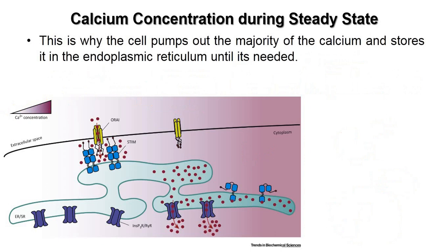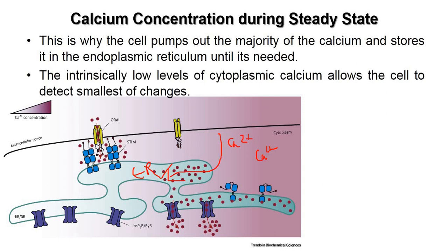The cell pumps out the majority of calcium from the cytosol and stores it in the endoplasmic reticulum. Because the intrinsic calcium concentration in the cytoplasm is so low, even a small change in calcium can be immediately detected. This intrinsically low level of cytoplasmic calcium allows the cell to detect the smallest possible changes in calcium concentration.